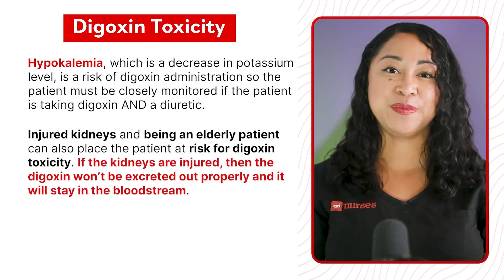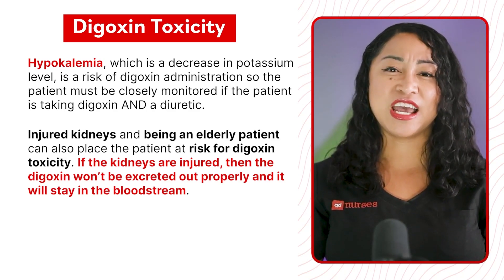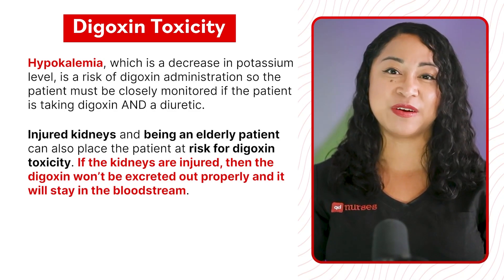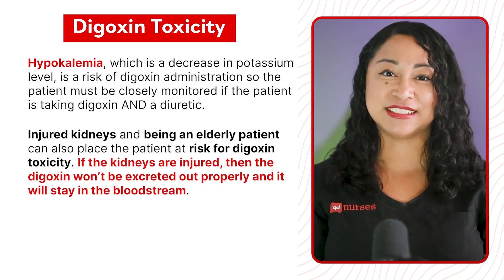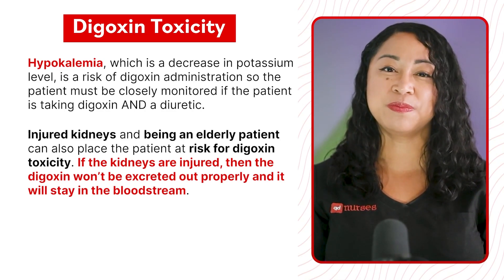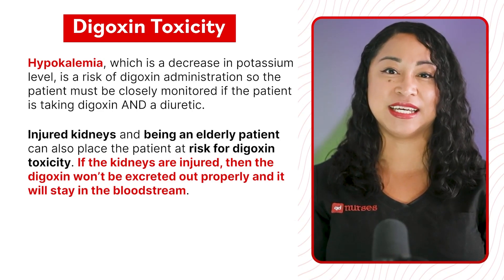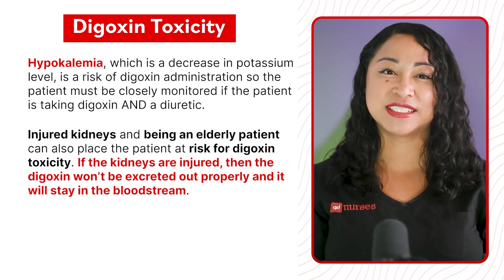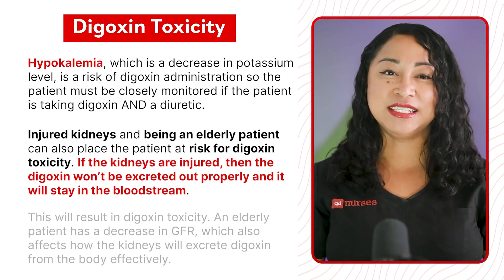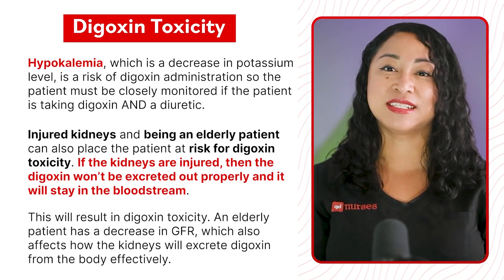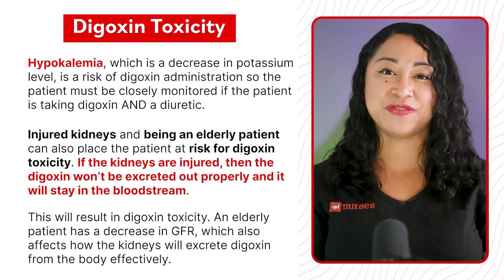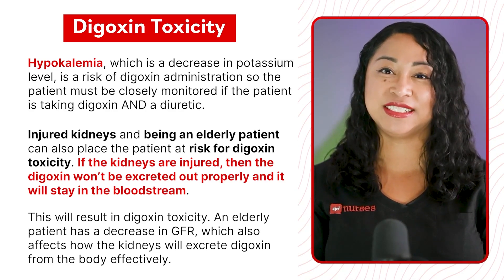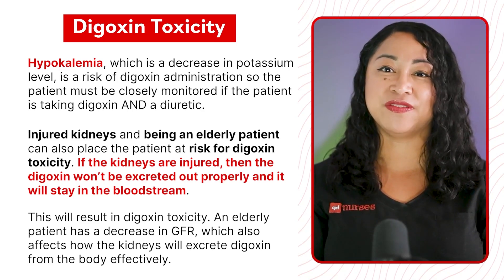Injured kidneys and being an elderly patient can also place the patient at risk for digoxin toxicity. If the kidneys are injured, the digoxin won't be excreted properly and will stay in the bloodstream, resulting in toxicity. An elderly patient has a decrease in GFR, which also affects how the kidneys excrete digoxin from the body effectively.